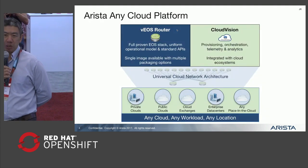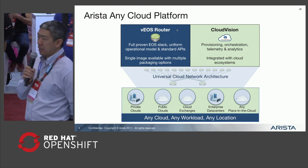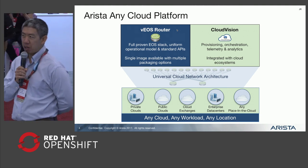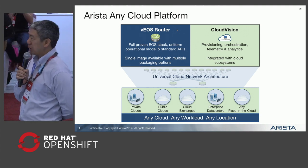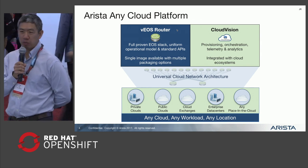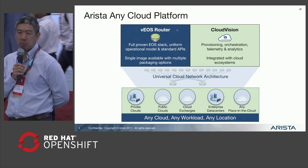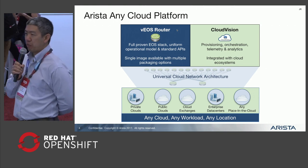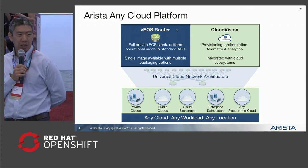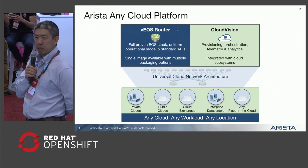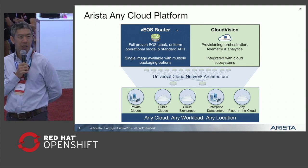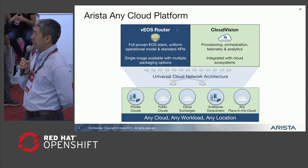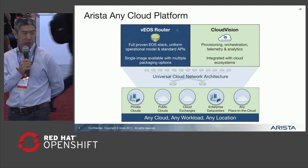What we recently introduced last year was the AnyCloud platform. That's taking the same operating system that we have on Arista switches and putting it into a virtual appliance. This provides virtualized routing and switching for different applications such as cloud-native applications. We'll be talking about how we can integrate EOS — our virtual EOS system — with OpenShift.